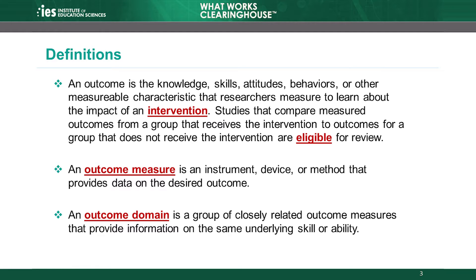Eligible group design studies estimate the effectiveness of an intervention by comparing measured outcomes from a group that receives the intervention to outcomes for a group that does not receive the intervention. An outcome measure is an instrument, device, or method that provides data on the outcome of interest. Impact evaluations use outcome measures to estimate the effect of the intervention. For example, studies commonly use achievement tests as outcome measures.